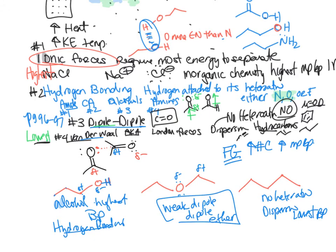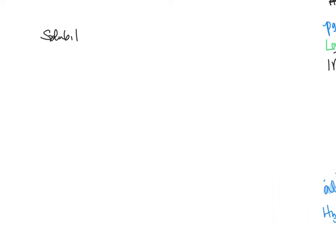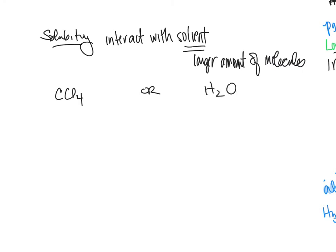The other physical property topic in this chapter is solubility — how a compound interacts with a solvent. A lot of times you'll decide whether a compound is soluble in carbon tetrachloride or water. The rule is 'like dissolves like.' Carbon tetrachloride is tetrahedral and symmetrical, giving an overall dipole moment of zero — it's nonpolar and relies on London/dispersion forces.